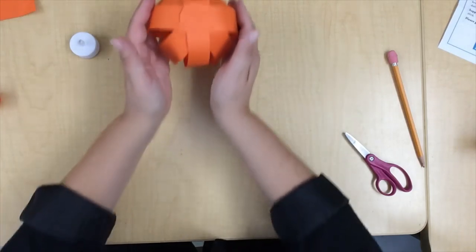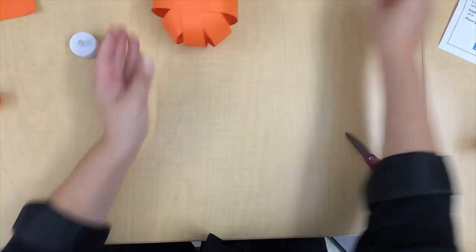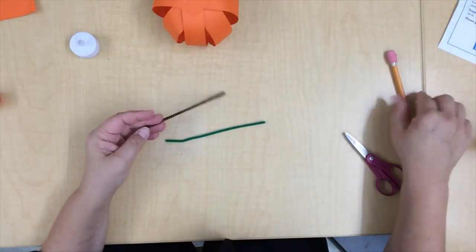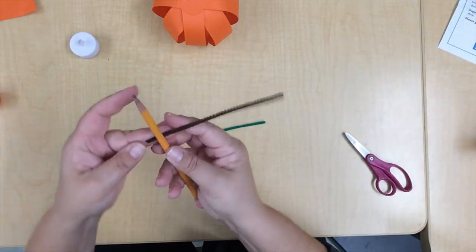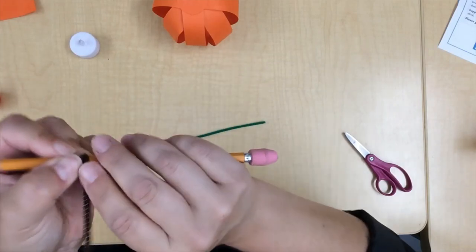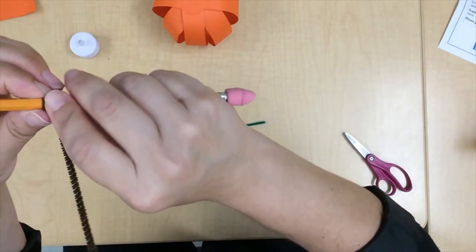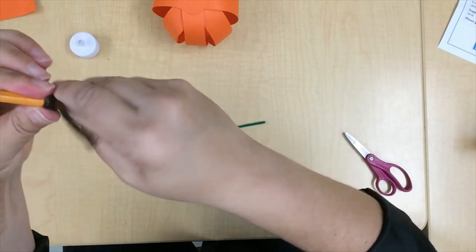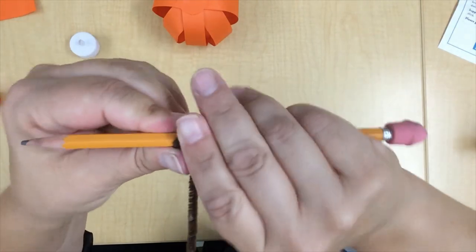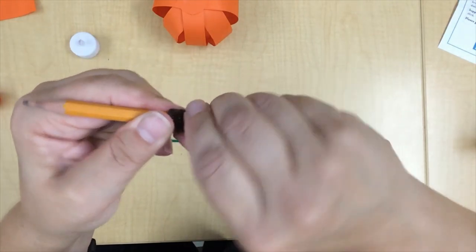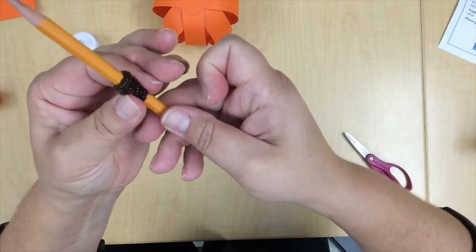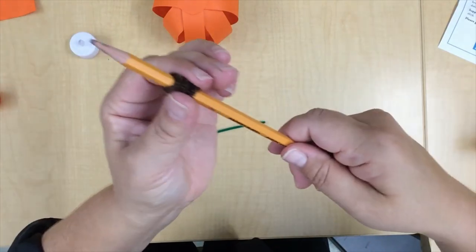All right, so we're going to put our pumpkin aside for a minute and we're going to grab our brown and green chenille stems and our pencil. Wrap your chenille stem around. The brown one, you're going to try to get it pretty close, if you can see pretty close here together. That's going to be our stem. So once you have done that, just slide it off.